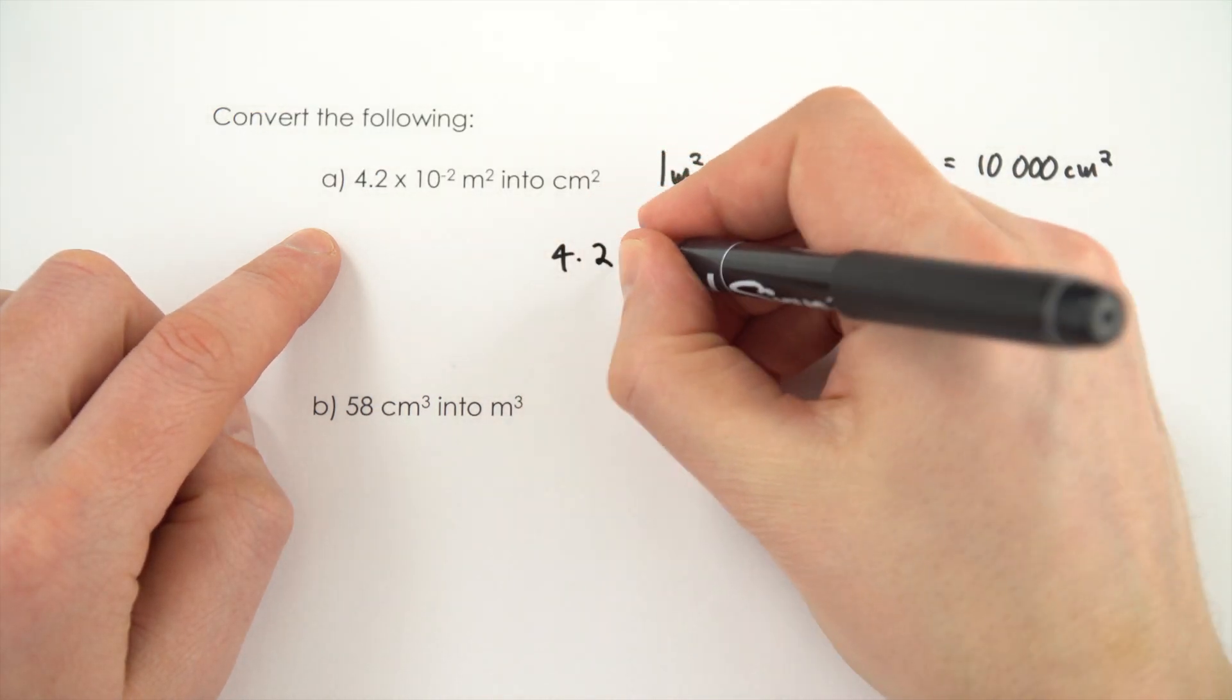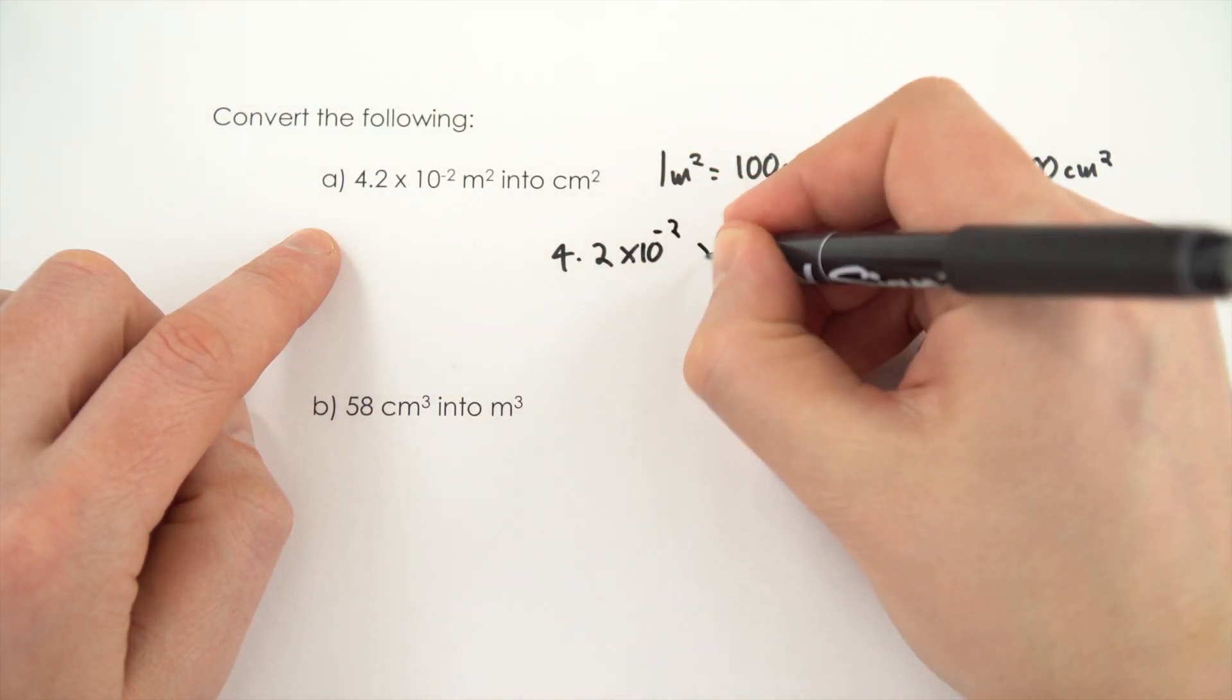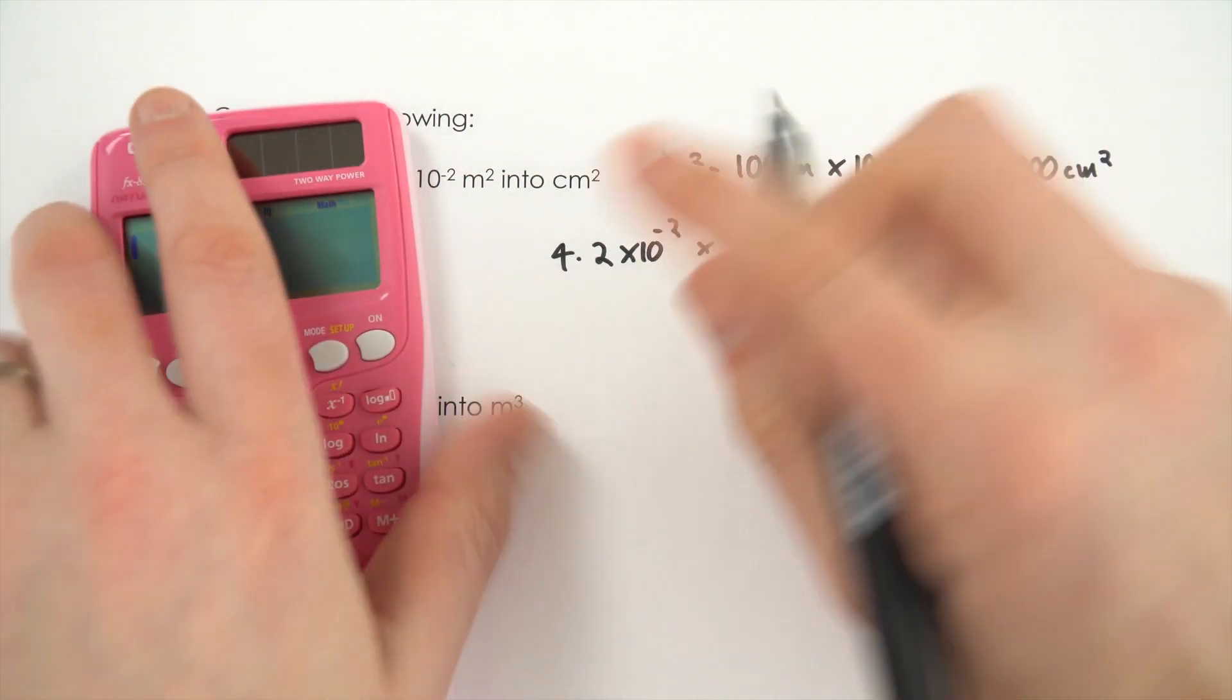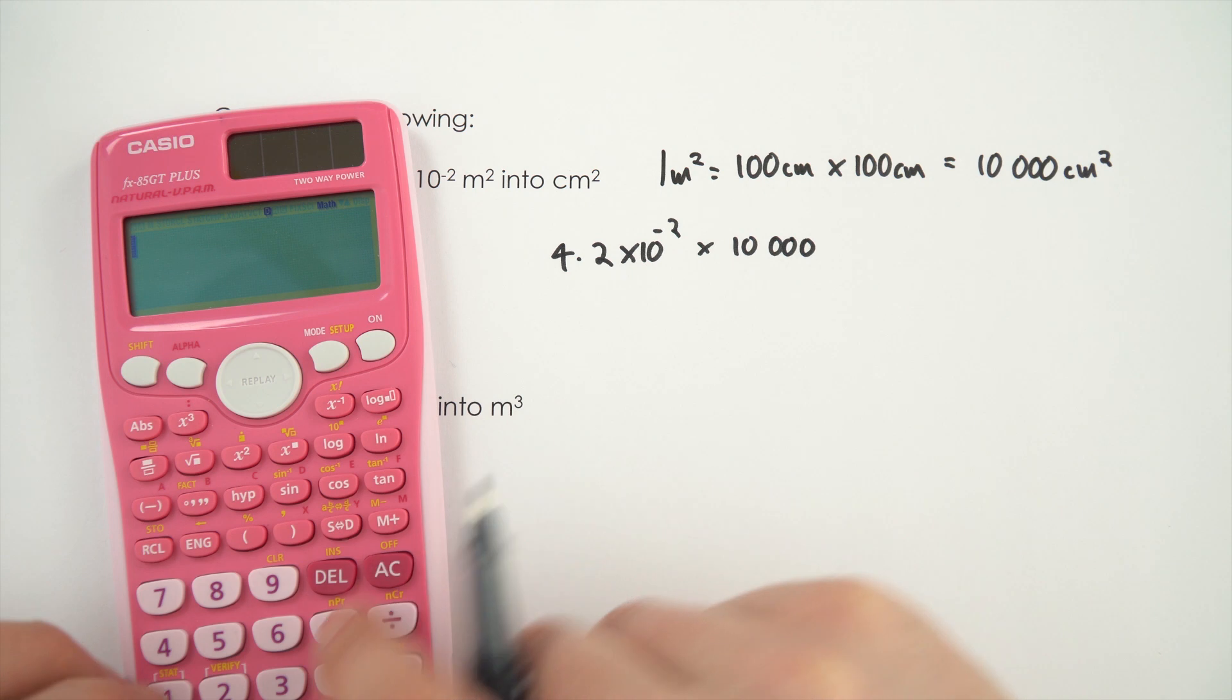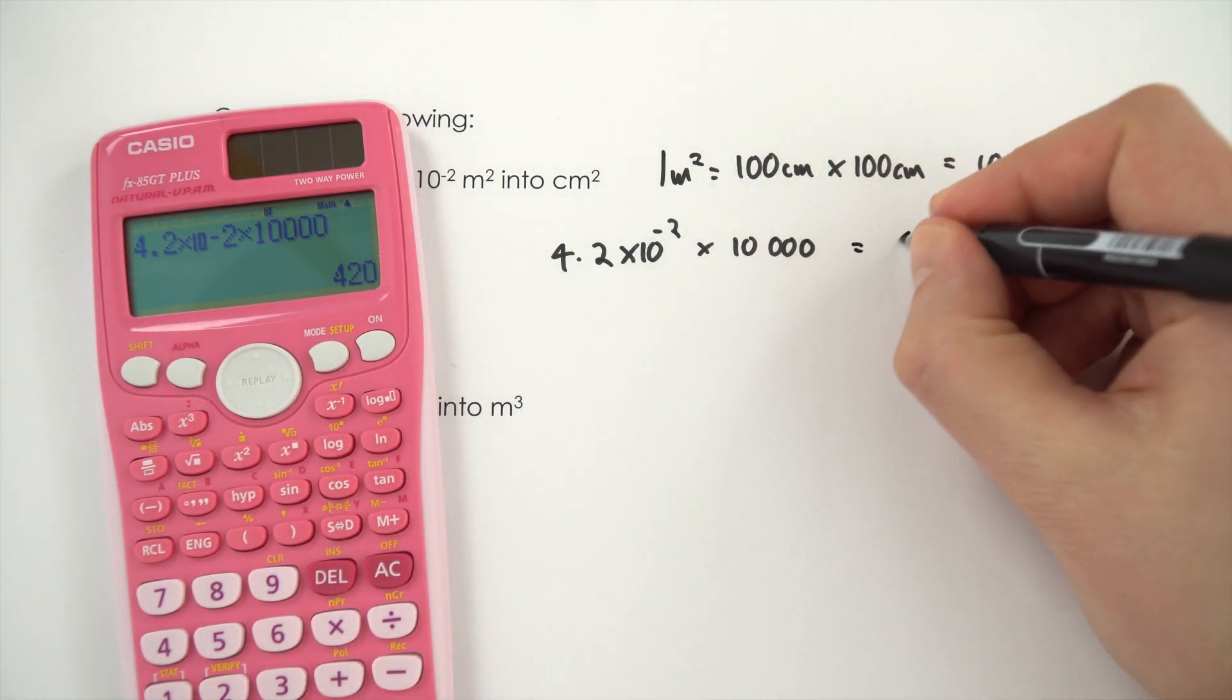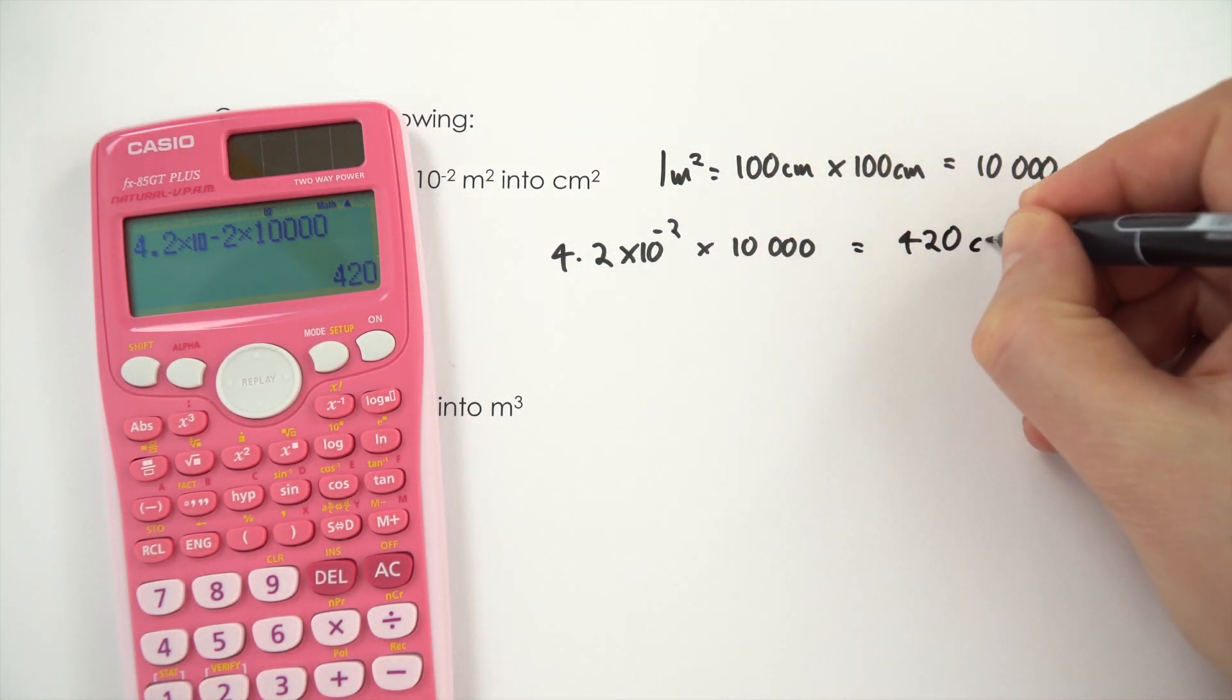So this is just going to be 4.2 times 10 to the minus 2 times 10,000 and just to make sure I don't make any mistakes with the decimal points I'm going to put this into my calculator. So that's 4.2 times 10 to the minus 2 times 10,000 and this is then equal to 420 square centimetres.